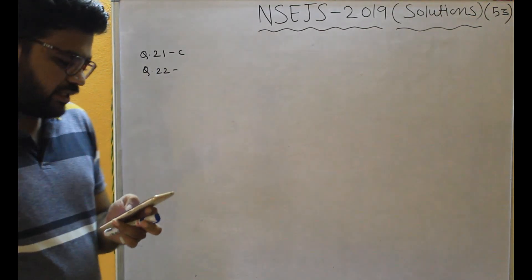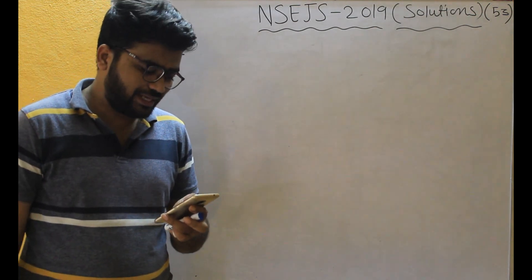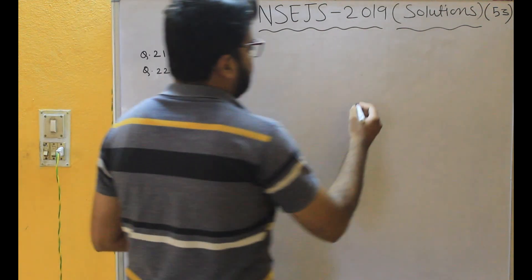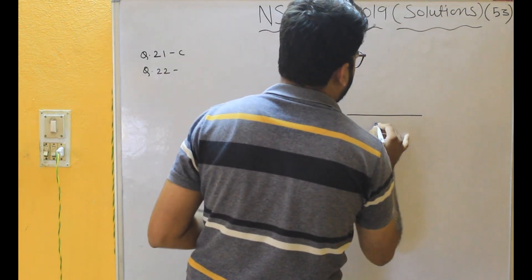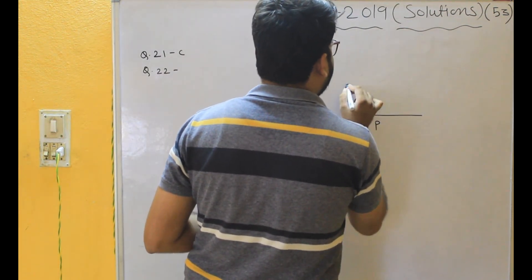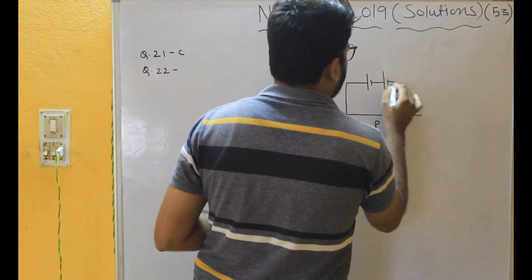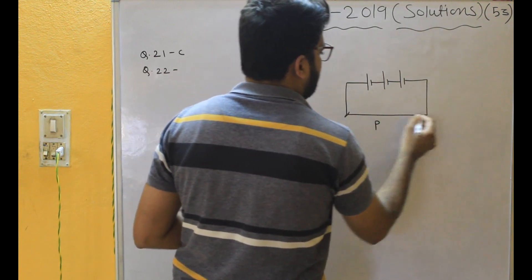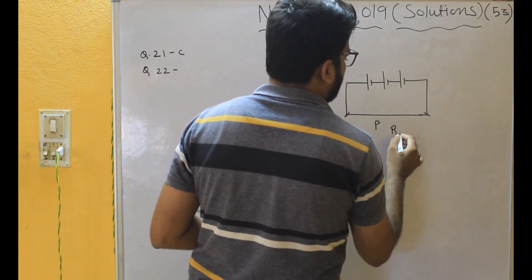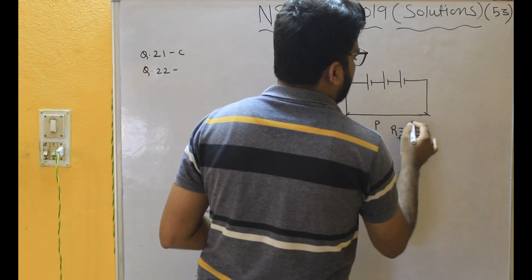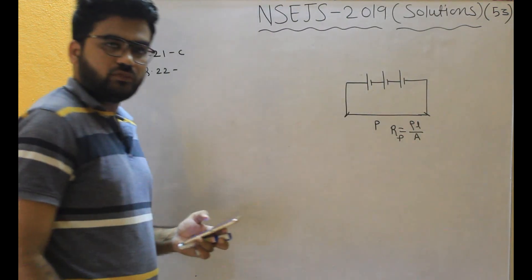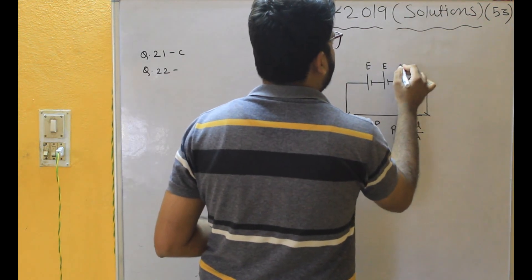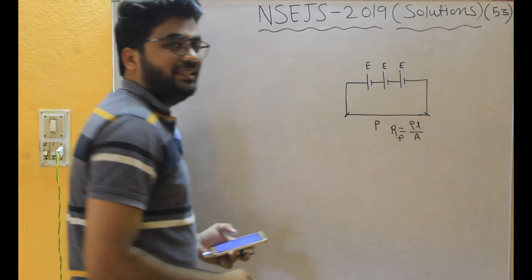Question number 22 says: a piece of wire P and three identical cells are connected in series. So we have a piece of wire P and three identical batteries — one, two, three — connected in series. The resistance of wire P will be ρL/A, and the equivalent battery voltage will be 3E.